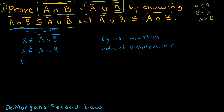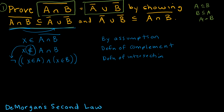If X belongs to the complement of A intersect B, then it doesn't belong to A intersect B — that's just by definition of a complement. I can write it slightly differently: X belongs to A and X belongs to B would be the definition of an intersection, but I'm saying that's not true because X does not belong to A intersect B.